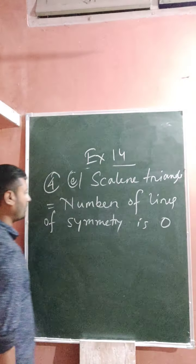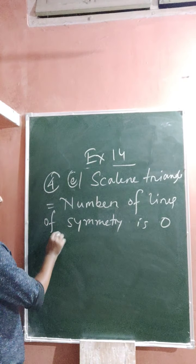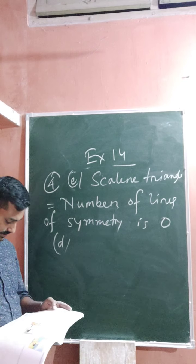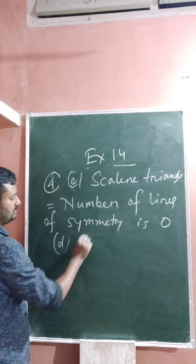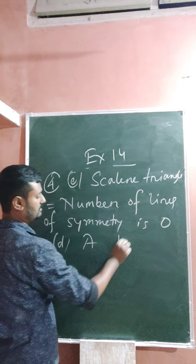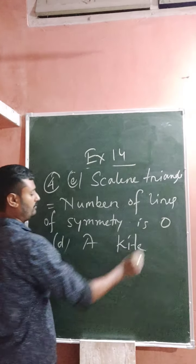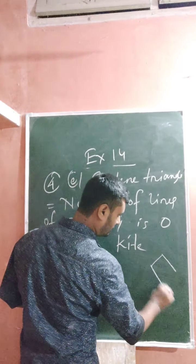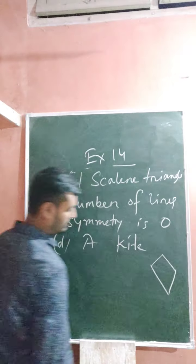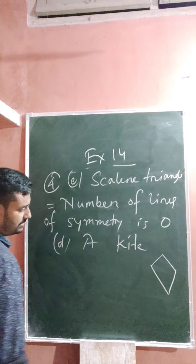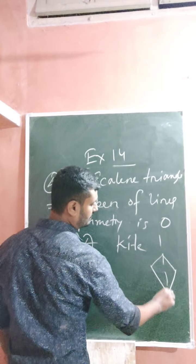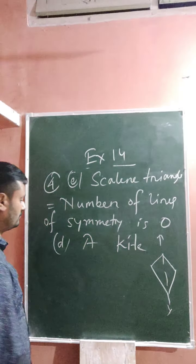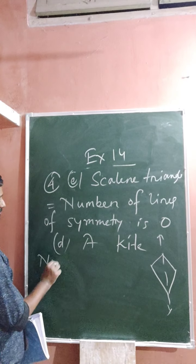Number d is a kite. The kite figure looks like this. It has only one line of symmetry — along the vertical line. So the number of lines of symmetry for a kite is one.